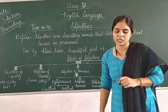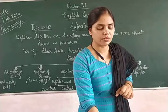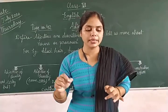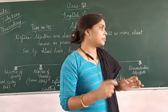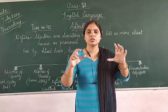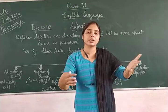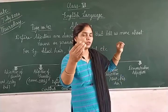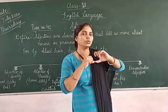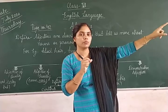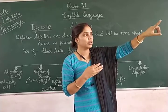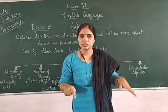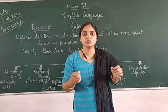Now move on to demonstrative adjectives. Demonstrative adjectives are words such as this, that, there, and these, which point to the nouns they describe. Demonstrative means to demonstrate — if we want to show something to someone, we use this, that, these, those.